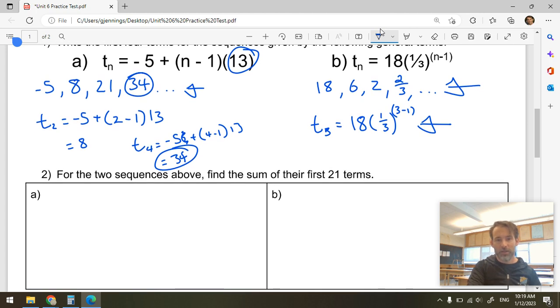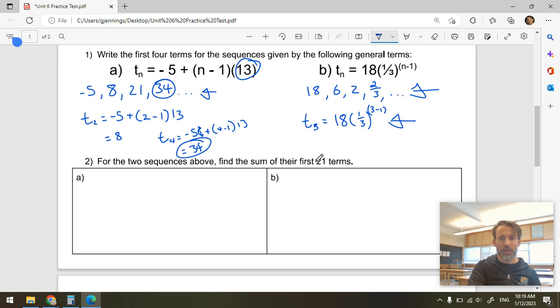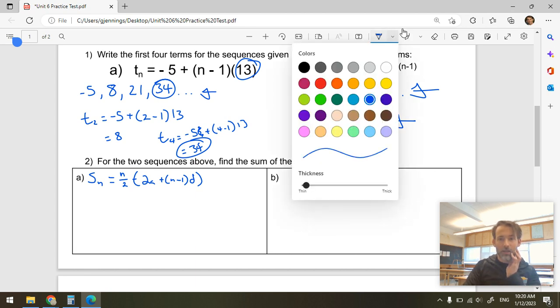Okay, now let's do the more fun part. If we have to take these two sequences above and find the sum of their first 21 terms, all right, well, that requires us to say, well, the sum of the first n terms of an arithmetic series is equal to the number of terms divided by 2 plus, oh, no, multiplied by, sorry, 2a plus n minus 1 times the difference. Okay? Common difference. All right? So we're going to need a little chart here, and I'm going to zoom in and work a little smaller as well. You should too.